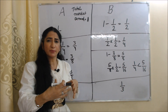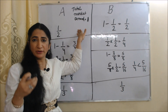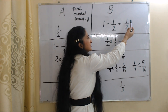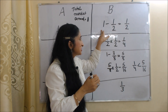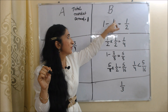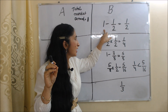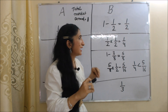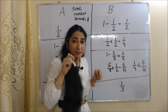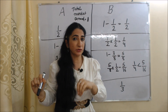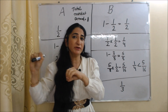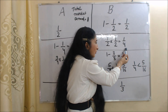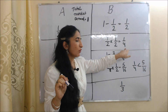As A starts production, profit increases. Seeing increased profit, firm B enters the market. Now available market demand is equal to 1 minus 1/2, which equals 1/2. B will produce half of the available market demand, so half of 1/2 is 1/4. Production of B is equal to 1/4.